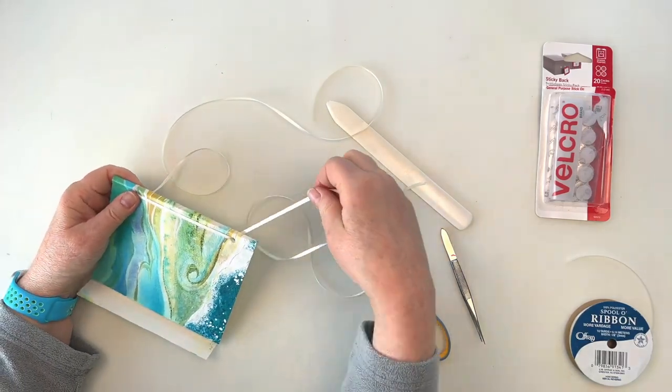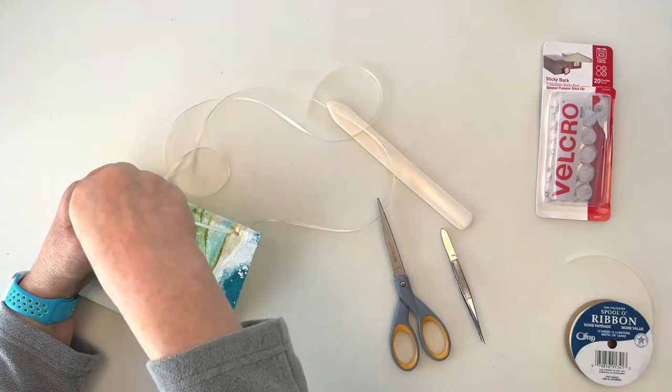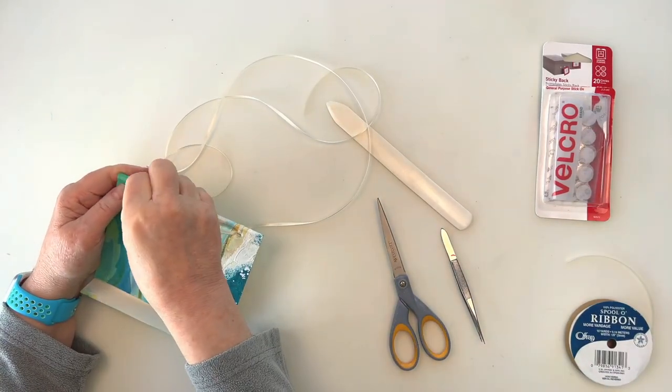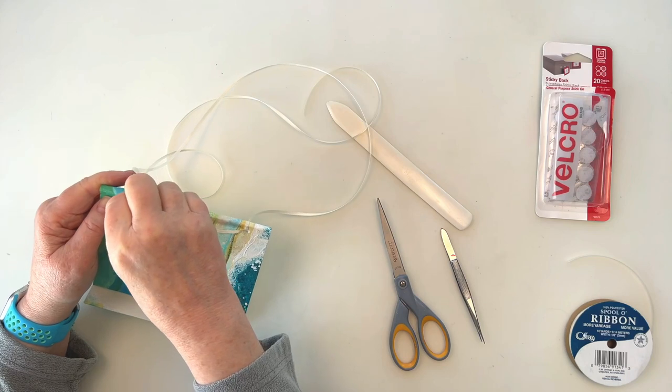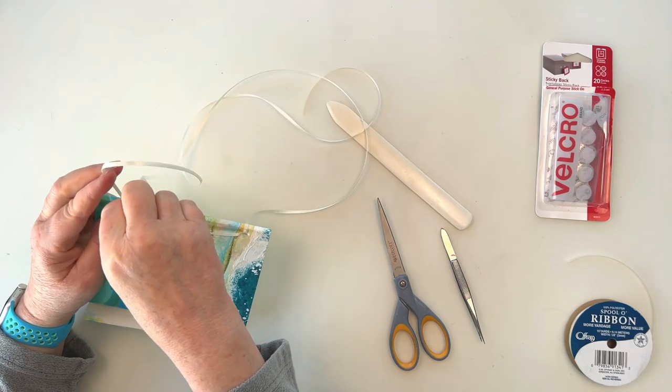Now I'll take each tail again across the spine, but this time I'll put it into the opposite hole so I get a crisscross pattern.